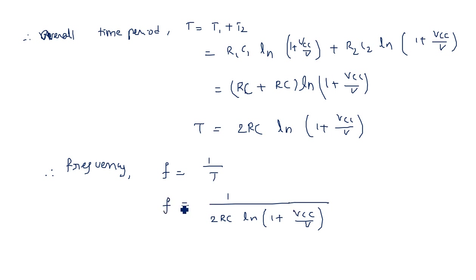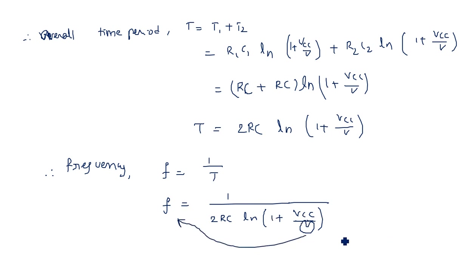The frequency is inversely related to the applied voltage V. By varying voltage V, the frequency can be varied, and hence this circuit acts as a voltage-to-frequency converter. Note the difference: the monostable multivibrator is considered a voltage-to-time converter and a gating circuit, but the astable multivibrator is always discussed in terms of voltage-to-frequency conversion. Thank you.